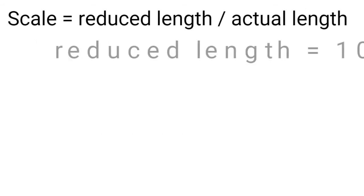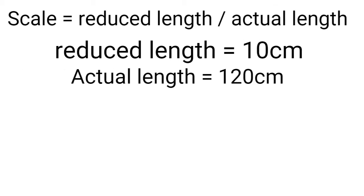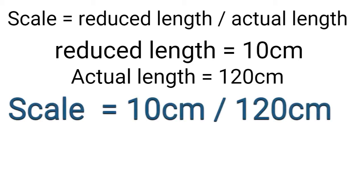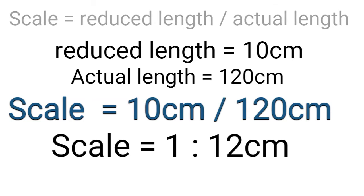Now let's solve this. The scale is equal to the reduced length divided by the actual length. From the question, the reduced length is 10 centimeters and the actual length is 120 centimeters. Using the formula: 10 centimeters divided by 120 centimeters. How many 10s are in 120? That's 12. So the scale is 1 ratio 12.